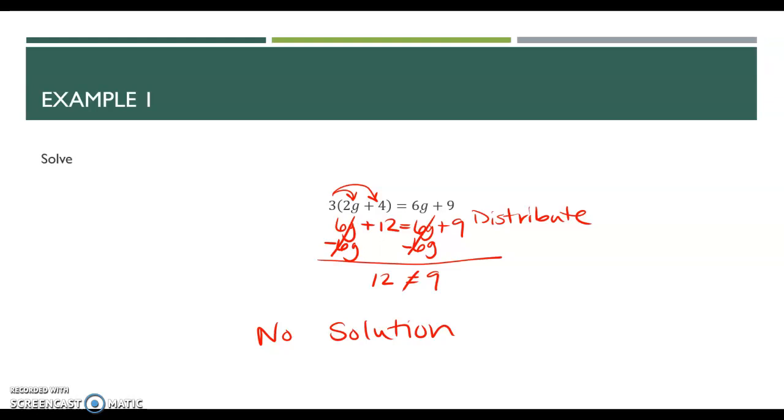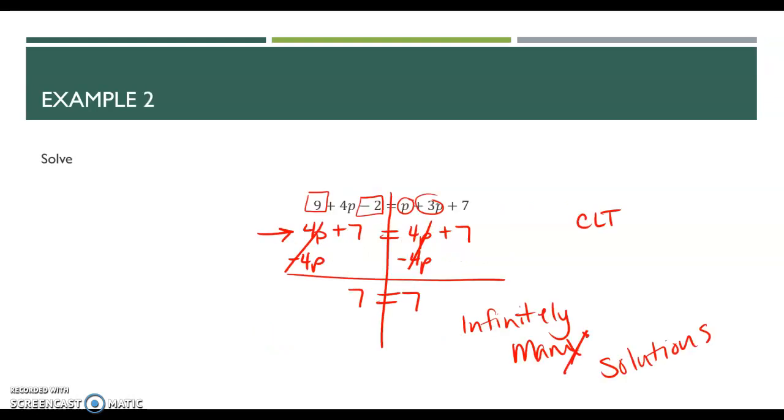If these were lines that we were graphing, which that will come later. If these were lines that we were graphing, these lines would never touch. And we'll get to what all that means at a different time. But main thing, if the left does not equal the right, and there's no variable, it's a no solution. If the left equals the right, and there is no variable, then there are infinitely many solutions.